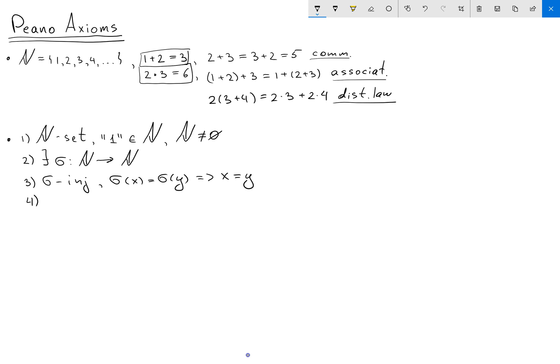My fourth axiom says that there doesn't exist any element n belonging to N such that sigma of n equals 1. So in other words we're saying that sigma is non-surjective.